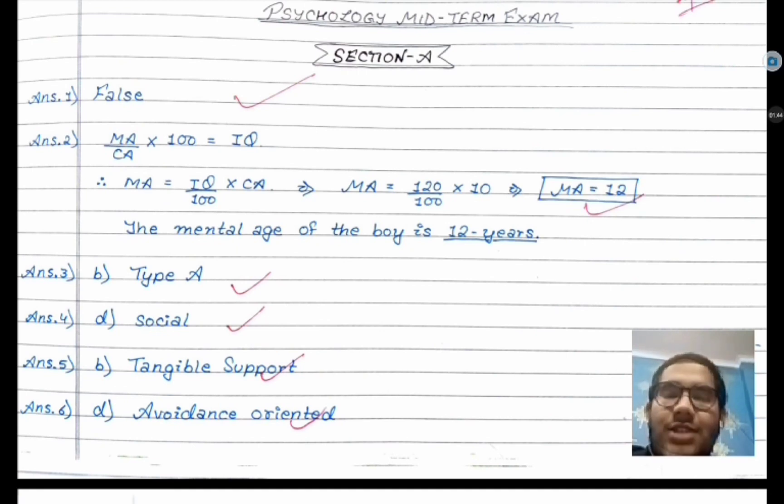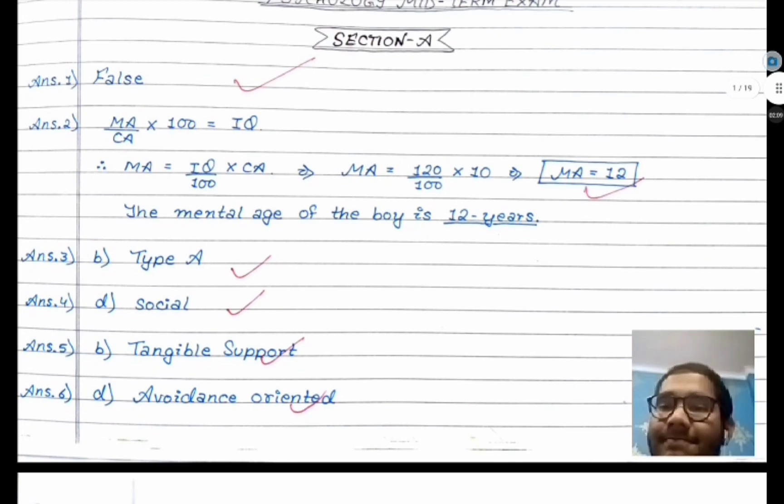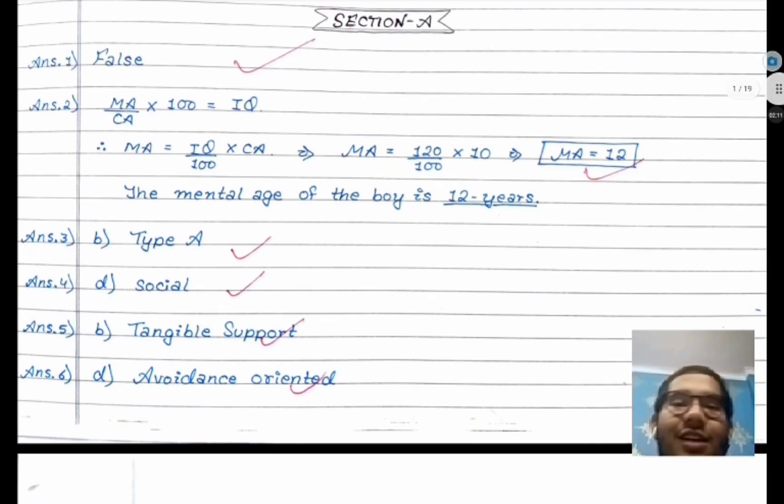But if you think the paper is too lengthy and won't be completed, then start from the back. Because if one marker questions are left at the front, it won't make much difference. But if your back questions are left, six markers or four markers, that will be a great problem for you.